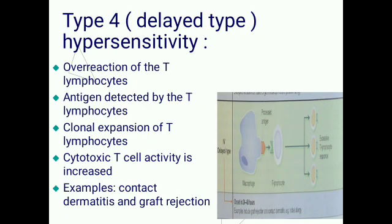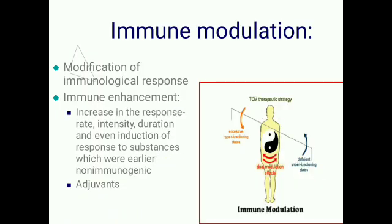Type 4 hypersensitivity, known as delayed type hypersensitivity, involves an over-reaction of T lymphocytes. The antigen is detected by T lymphocytes, causing clonal expansion of T lymphocytes and therefore increased cytotoxic T cell activity, resulting in a hypersensitivity reaction. Examples include contact dermatitis and graft rejection.